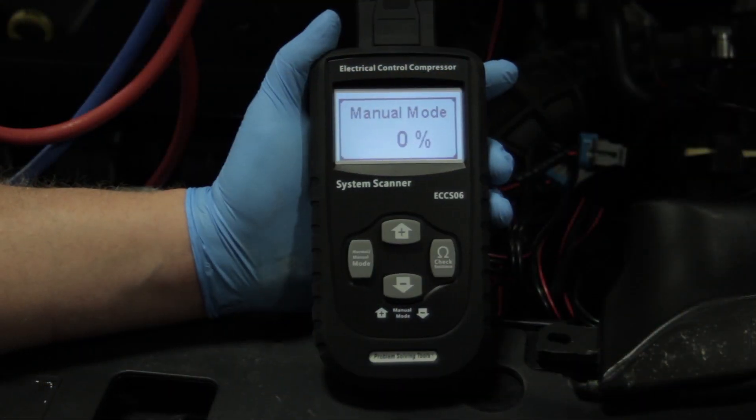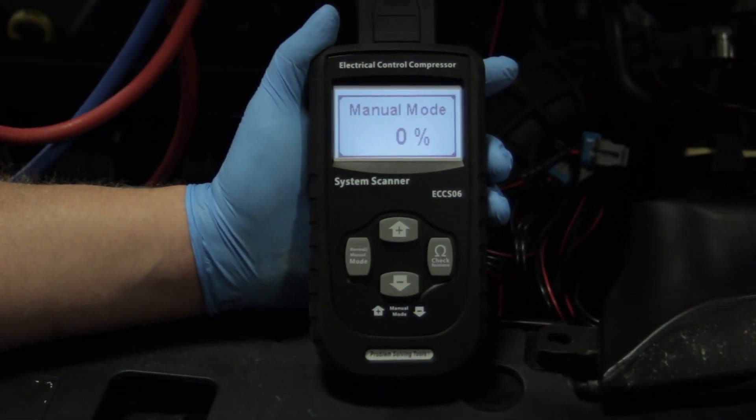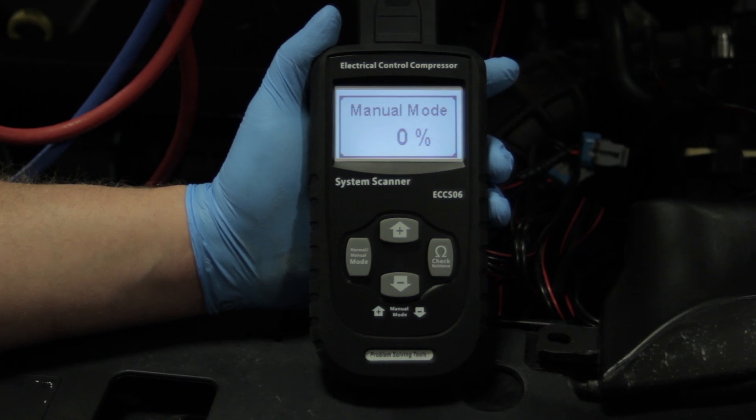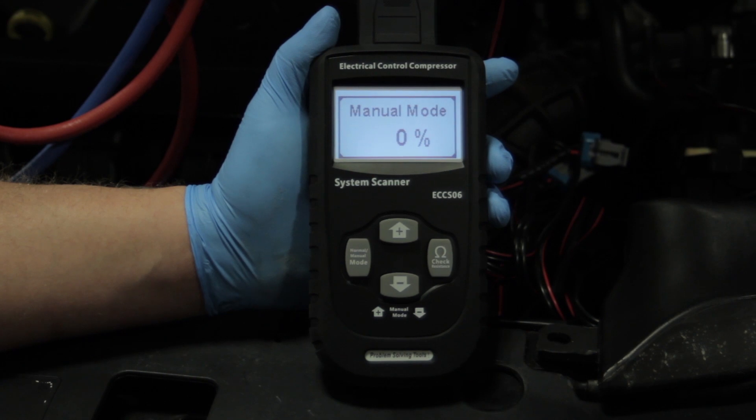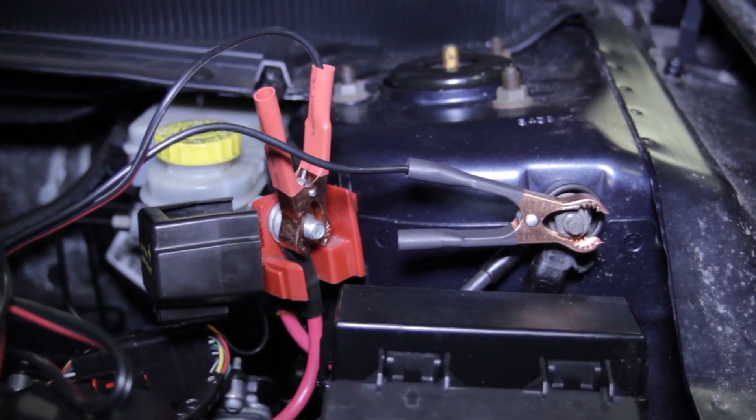And the first thing we need to do is plug it into a power source. Now if the battery is accessible, go for it. In this particular case, you'll notice I've hooked it up to the battery jumpstart terminals located on the strut tower here. So the tool is now powered up.